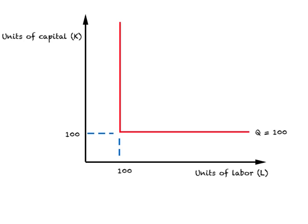Now suppose you have only one technology available. You want to produce 100 units of output, and you can produce this when factors have to be used in fixed proportions. So you'll need 100 units of workers and 100 units of capital to produce this level of output. In this case, the isoquant will be L-shaped. If you decide to use 100 units of machines and 200 workers, the output will still be 100 units. So if you have one technology available, remember an isoquant will be L-shaped.